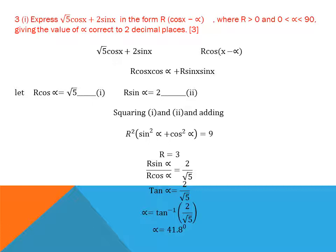Equating coefficients: R·cos α = √5 and R·sin α = 2. Squaring and adding: R²(sin²α + cos²α) = 5 + 4 = 9. Using the identity sin²α + cos²α = 1, we get R² = 9, so R = 3 (taking only the positive value since R > 0).